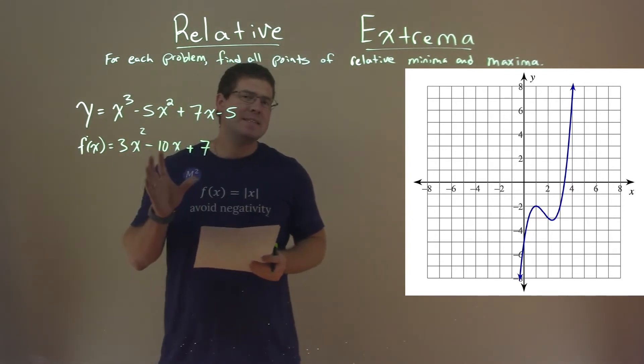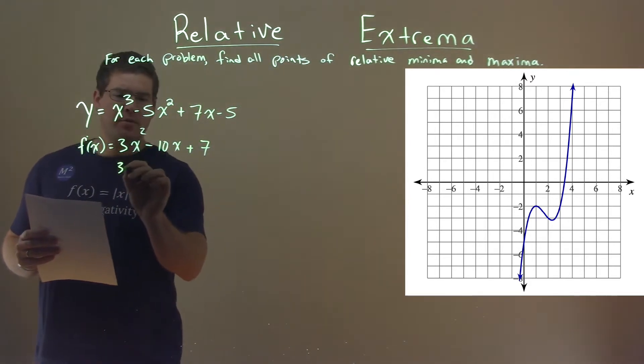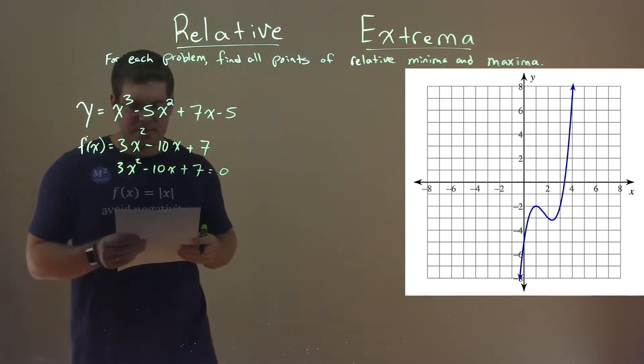Now from there, we need to set this derivative to 0. So we find those critical points: 3x squared minus 10x plus 7, and we set it equal to 0.